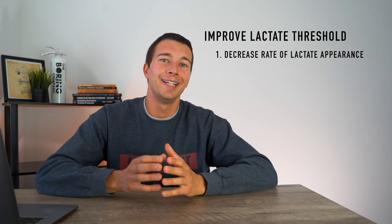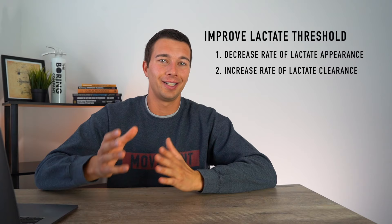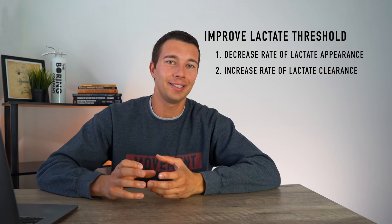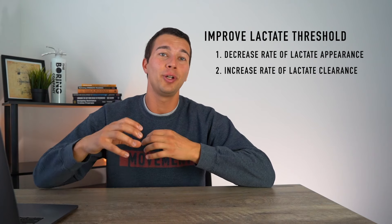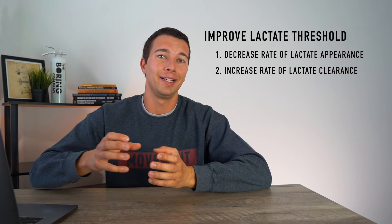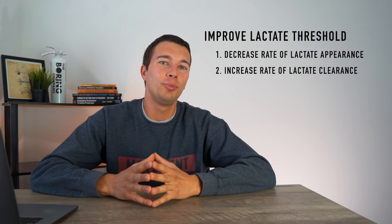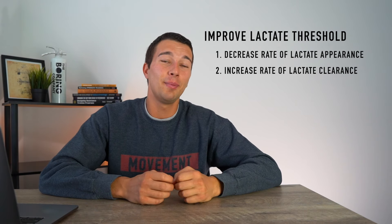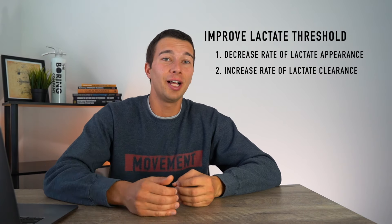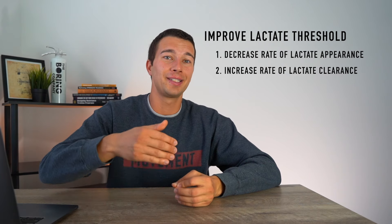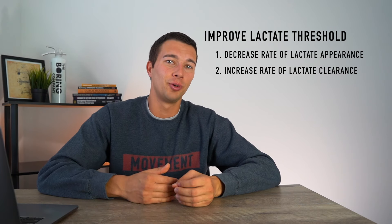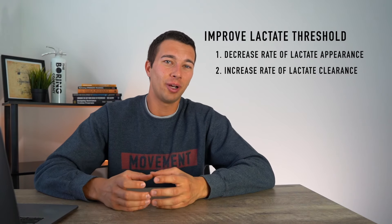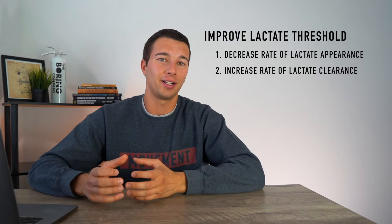The other side of the equation is lactate clearance. To clear lactate we actually need to be working at a high enough intensity to produce lactate and train our body's systems for clearance. Workouts that can help improve lactate clearance could be interval training — for example, working five minutes above your lactate threshold and then working five minutes easy below your lactate threshold. As you work higher and longer intervals above your threshold, you're training your body for that clearance.